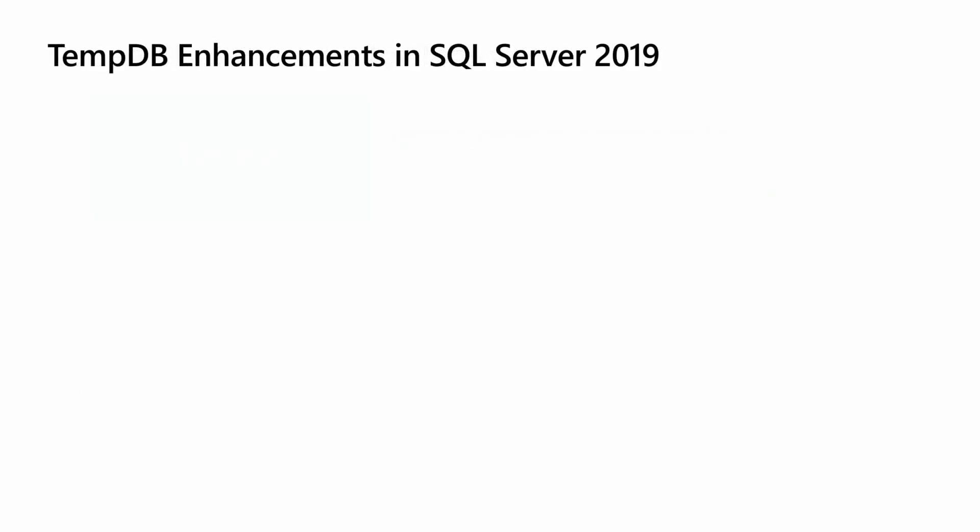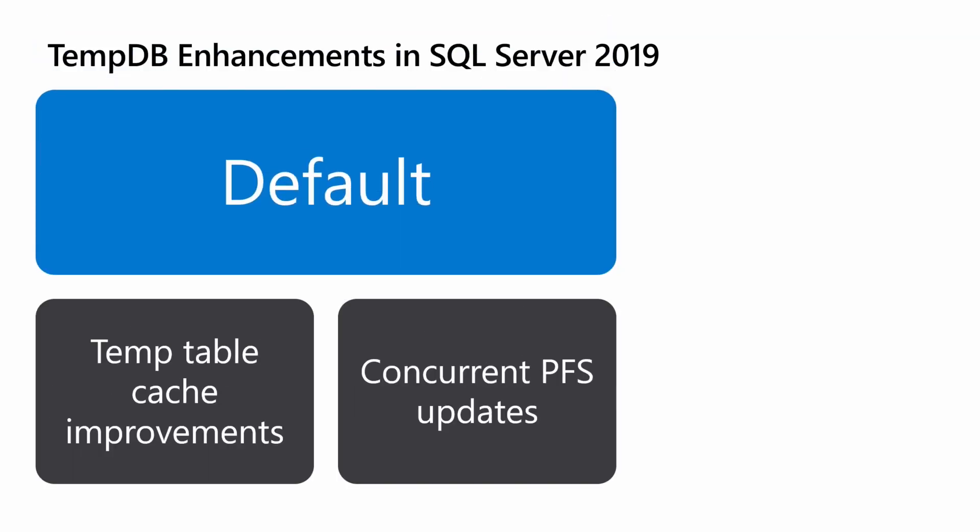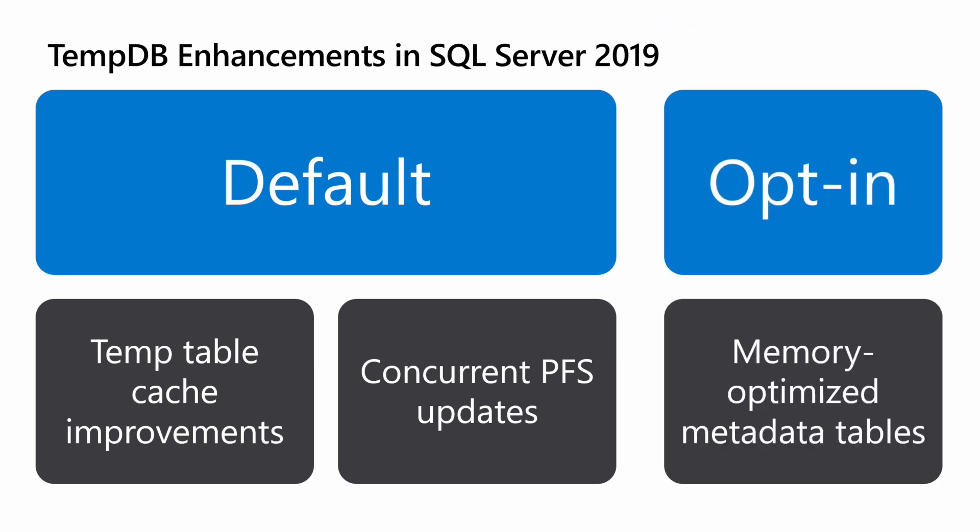So let's talk about SQL Server 2019. By default, out of the box, there are two types of improvements that will impact TempDB performance. The first is temp table cache improvements — we've done things like partitioning cache objects and optimizing cache lookup to get around temp table cache contention. Another is concurrent PFS updates, which addresses object allocation contention by allowing multiple threads to share a latch on the PFS page, enabling more concurrent threads and less contention. The last one is an opt-in feature: memory optimized metadata tables. We're moving those system objects into memory optimized tables that have latch-free, lock-free structures, which greatly increases concurrency against those metadata tables and helps alleviate metadata contention.